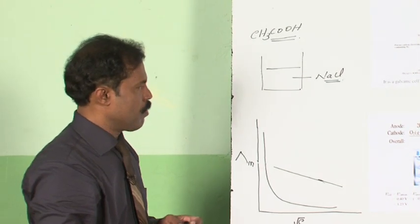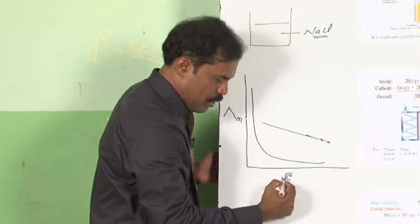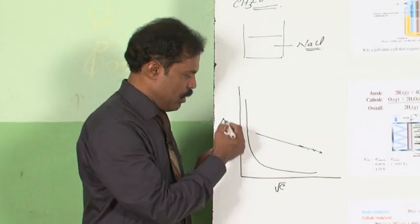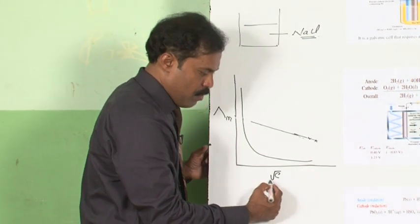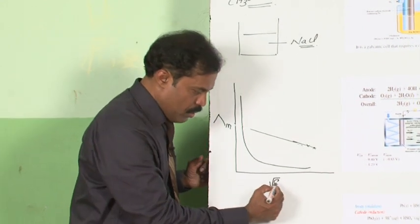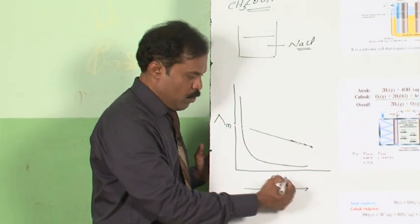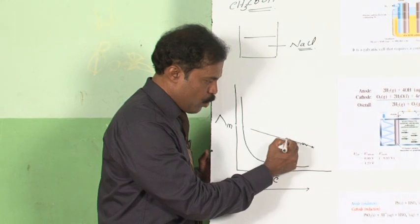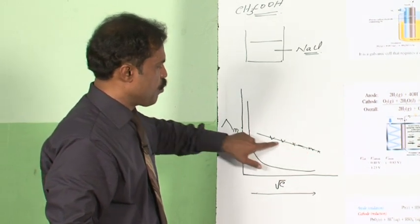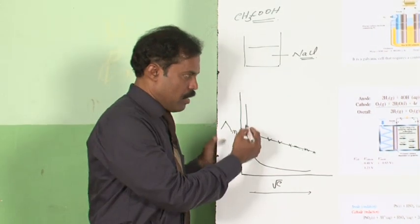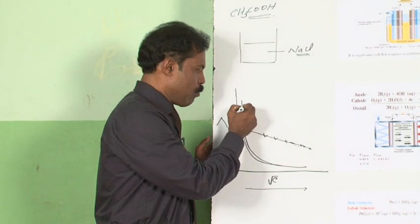If we try to follow how molar conductivity changes with dilution, we get a graph something like this. On the x-axis I have plotted the square root of concentration, and here I am plotting the molar conductivity. With dilution, concentration decreases. You can see that in this direction concentration is increasing, so in the reverse direction concentration is decreasing. When the dilution is increased, the molar conductivity slowly increases. The increase in molar conductivity for the strong electrolyte follows this path, whereas in the weak electrolyte you can see the difference — molar conductivity changes like this, with a steep rise, but afterwards it goes almost straight to the y-axis.